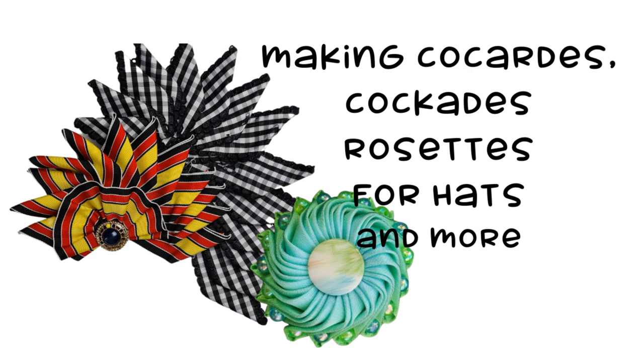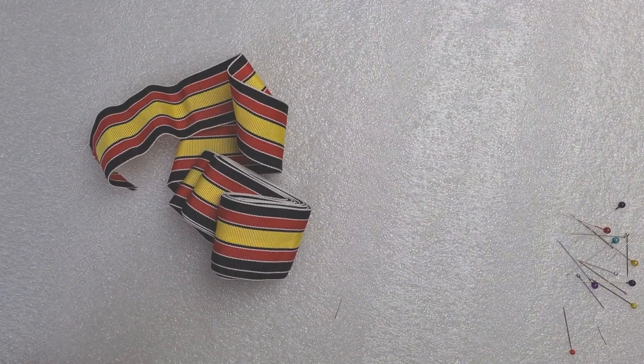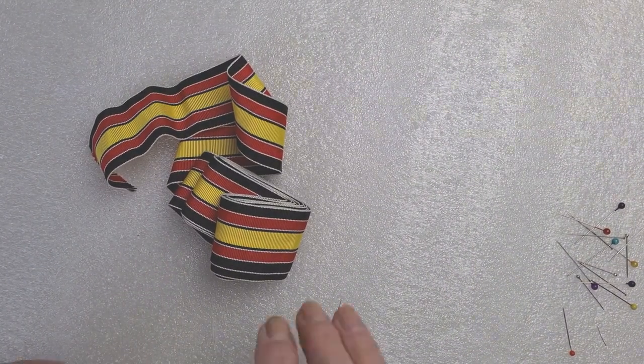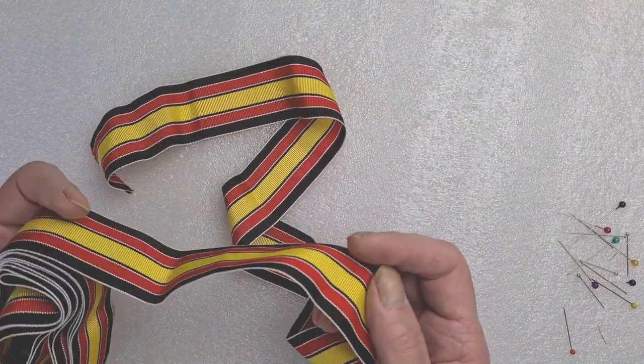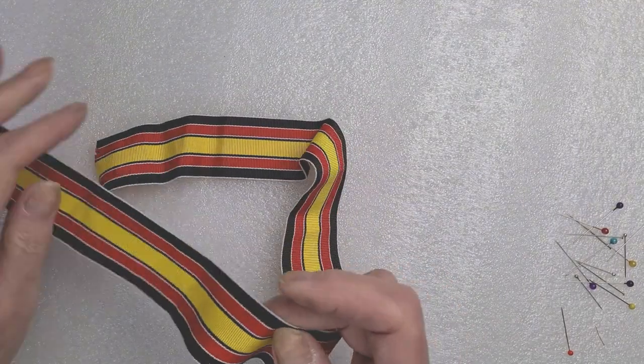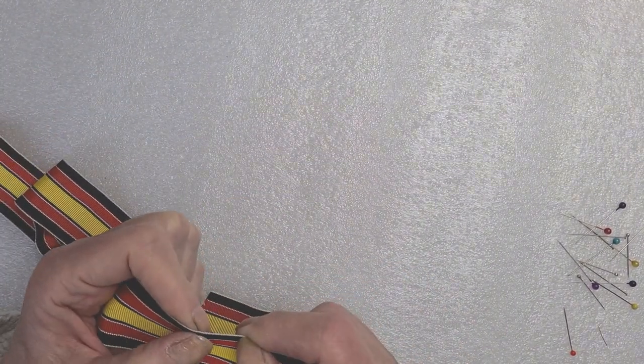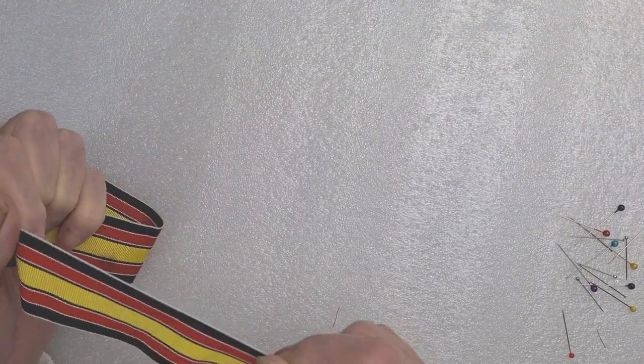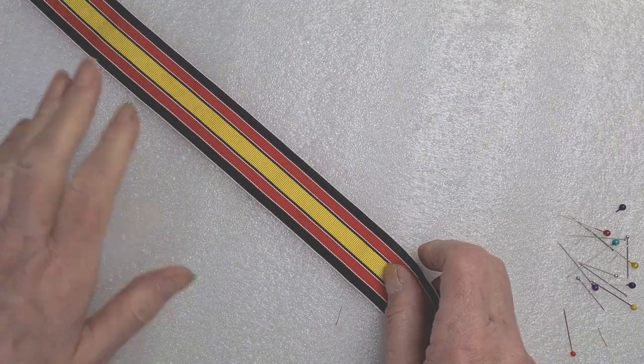We're going to make a cockade, or cockade depending on how you like to pronounce it. What I've got here is quite a long length, about three meters, which I won't need all of, of Petersham grosgrain. This isn't millinery grosgrain, it's just polyester. You can do this with any ribbon and any width.